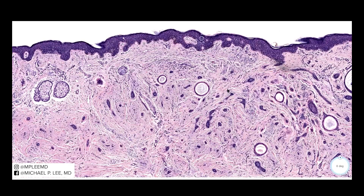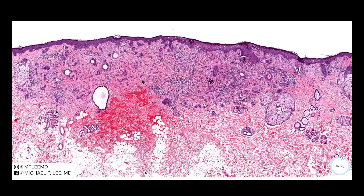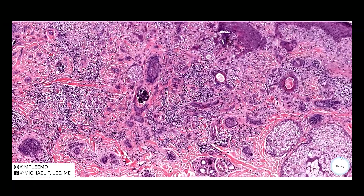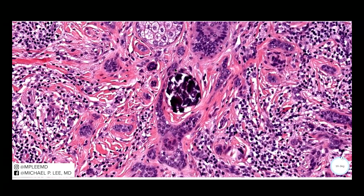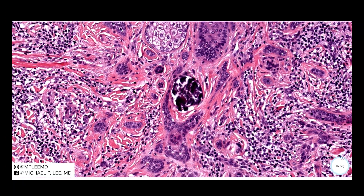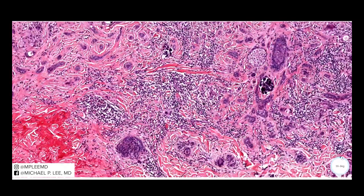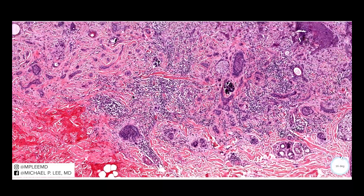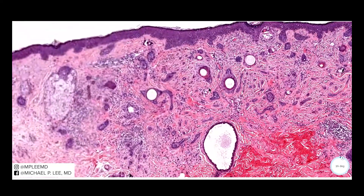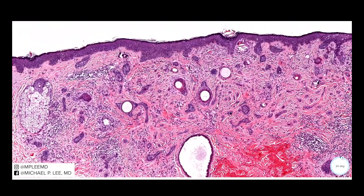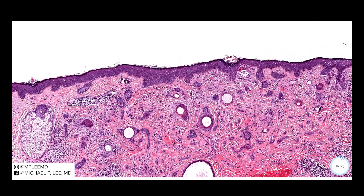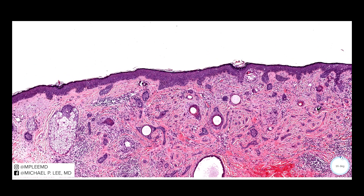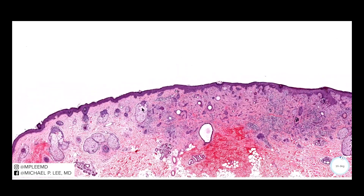Here's just another example. More pronounced calcifications here, and actually some inflammation, probably because some of the horn pseudocysts had prior rupture — and that's why it's pretty fibrotic here as well. Numerous microcysts, some of them even looking like syringoid or eccrine ductal differentiation. But overall, very well circumscribed, not penetrating deeply, and generally in a younger person.